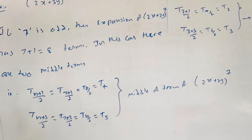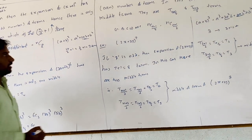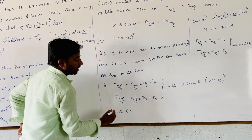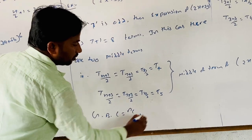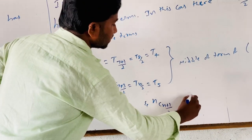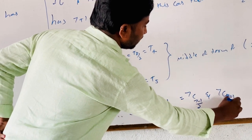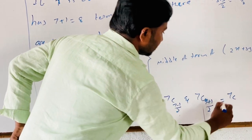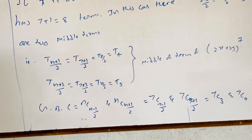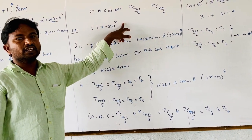Now finding the greatest binomial coefficients (GBC) in the expansion of (2x + 3y)^7. Using the formula nC(n−1)/2 and nC(n+1)/2, we get 7C(7−1)/2 and 7C(7+1)/2, that is 7C3 and 7C4. So 7C3 and 7C4 are the greatest binomial coefficients in the expansion of (2x + 3y)^7.